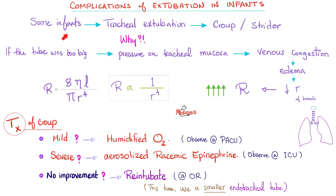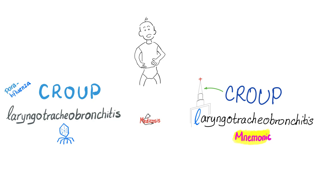Complications of extubation in infants and children: some infants during extubation can suffer from croup or stridor because the tube was too big, causing pressure on the tracheal mucosa, leading to venous distension and edema. Edema decreases the airway radius, and resistance increases to the fourth power. If mild: humidified oxygen and observe at the PACU. If severe: nebulized racemic epinephrine and observe in the ICU. If not improving, re-intubate in the operating room — and this time use a smaller endotracheal tube.